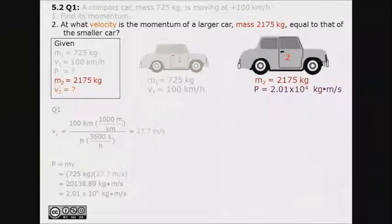A second diagram is drawn and as the question asks for the velocity of the second car when it has the same momentum as the smaller car, we use the momentum that we calculated in the first part of the question.